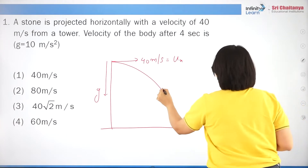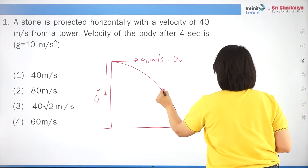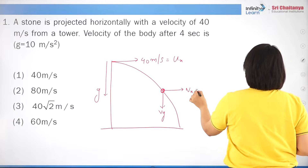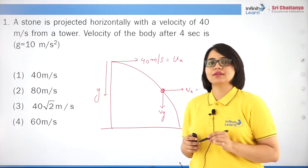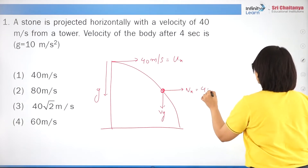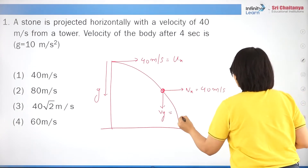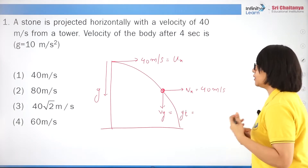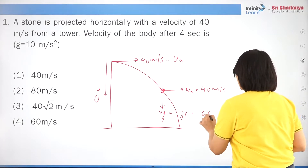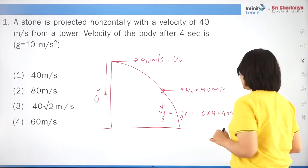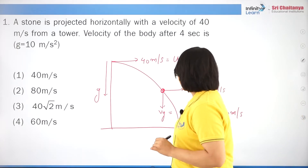Question number 1: a stone is projected horizontally with a velocity of 40 meter per second from a tower. What is the velocity of the body after 4 seconds? The stone is projected horizontally with velocity 40 m/s. This is the initial velocity along the x-axis (ux). The acceleration of the body will be g downwards — let's take g as 10 m/s².